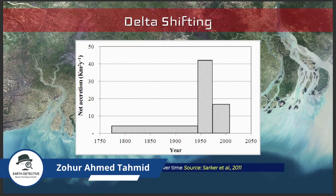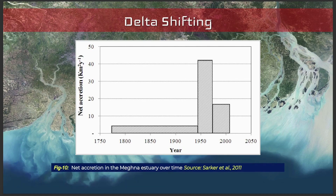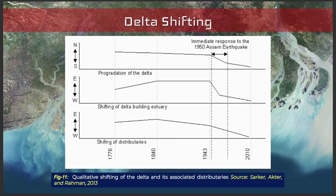The net accretion of the Meghna Estuary over the last 250 years is shown in this graph. We can see the accretion rate jumped in the 1950s, which may be a consequence of the Assam earthquake. Since then the rate has been decreasing. The progression of the delta was towards the south but was accelerated drastically due to the Assam earthquake of 1950. The same happened for east–west shifting: the delta first prograded from west to east, then from 1840 to 1943 there was almost no east–west progradation, and due to the Assam earthquake the delta quickly shifted westward, still prograding west at a lower rate than in 1950.